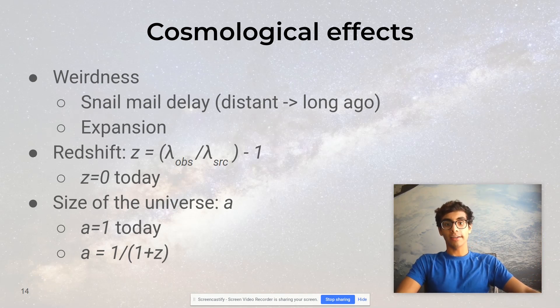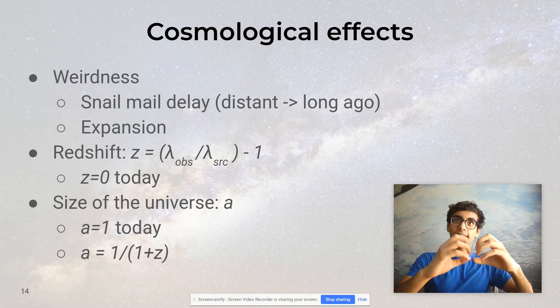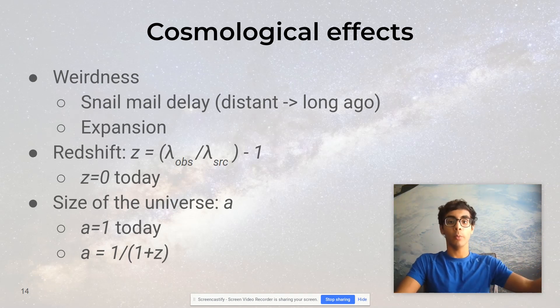The other one is the expansion of the universe, a distinct effect that only compounds the confusingness of the snail mail delay. If space itself is getting bigger, what does the notion of distance even mean? When a galaxy is moving away from us, is that because it's actually moving, or is it because the expanding space between us is increasing our separation? Or is there even a difference between those two things? The answer is sort of, depending on how you think about it.